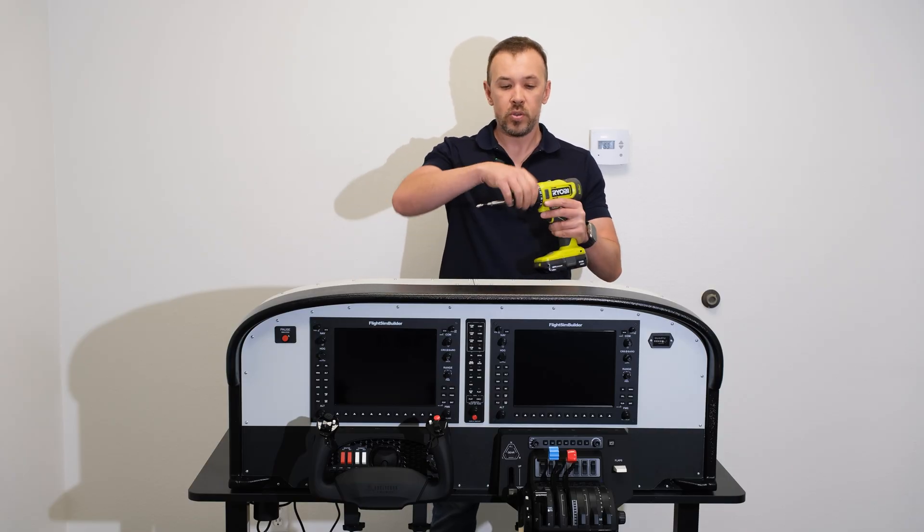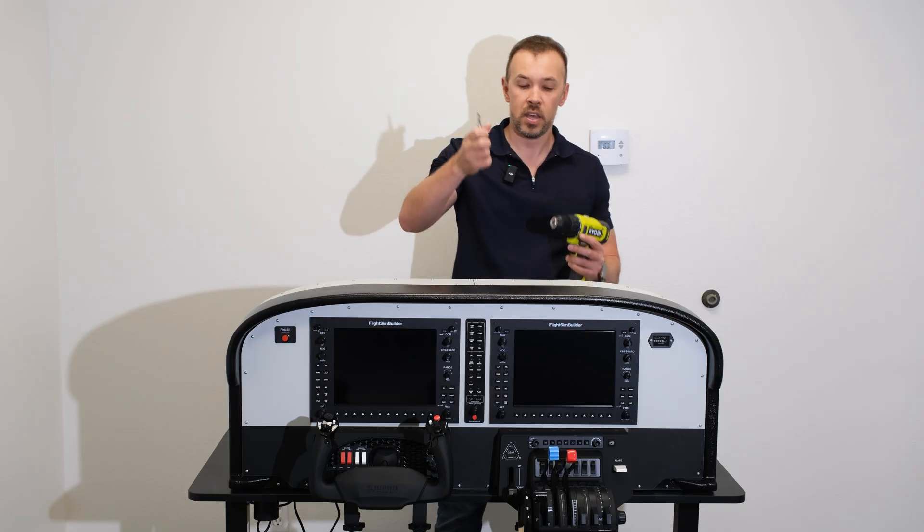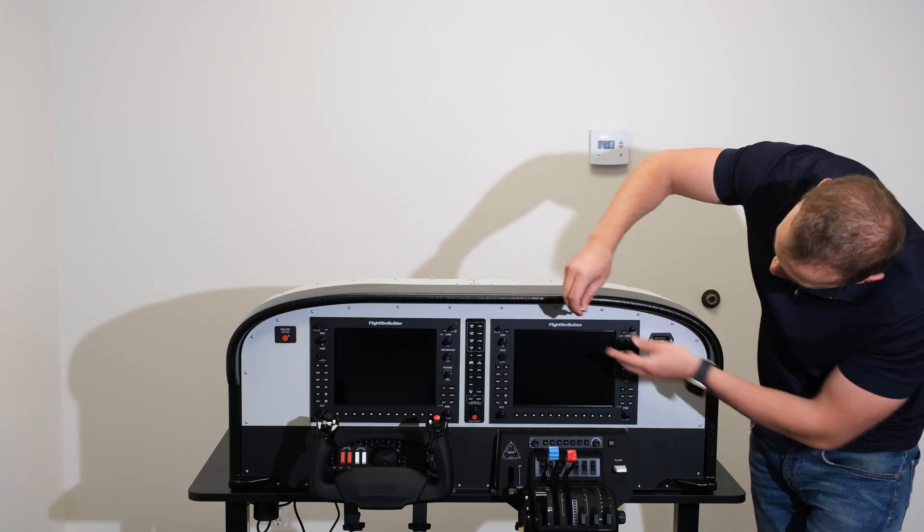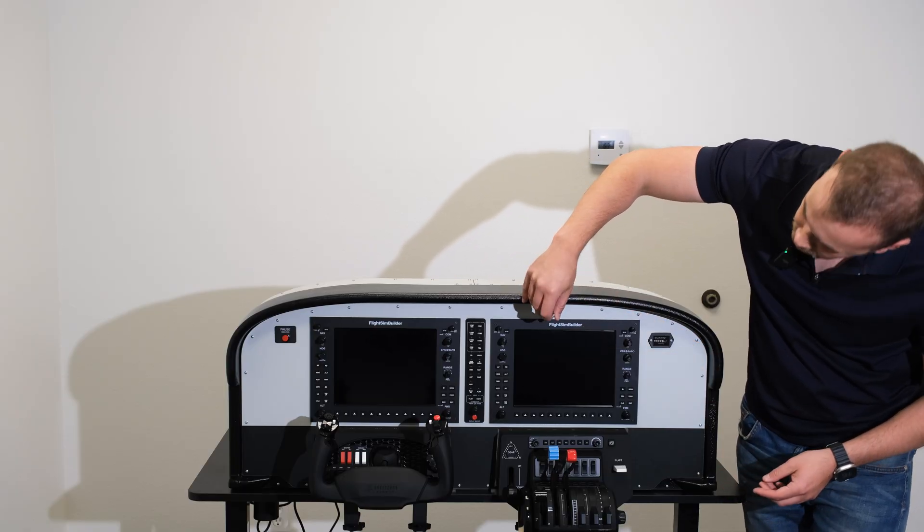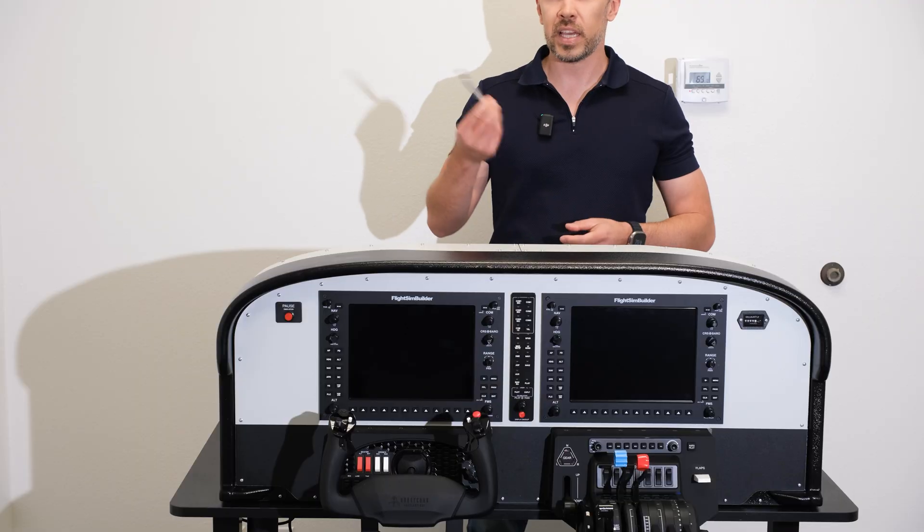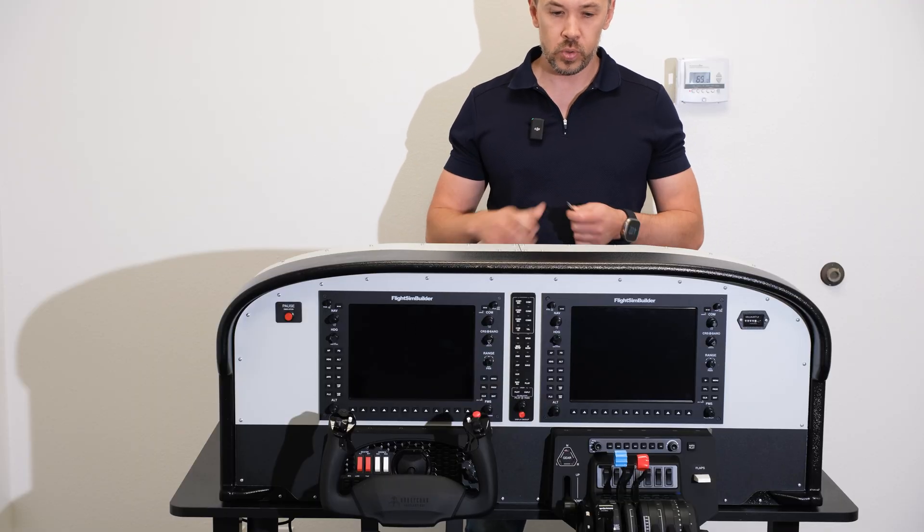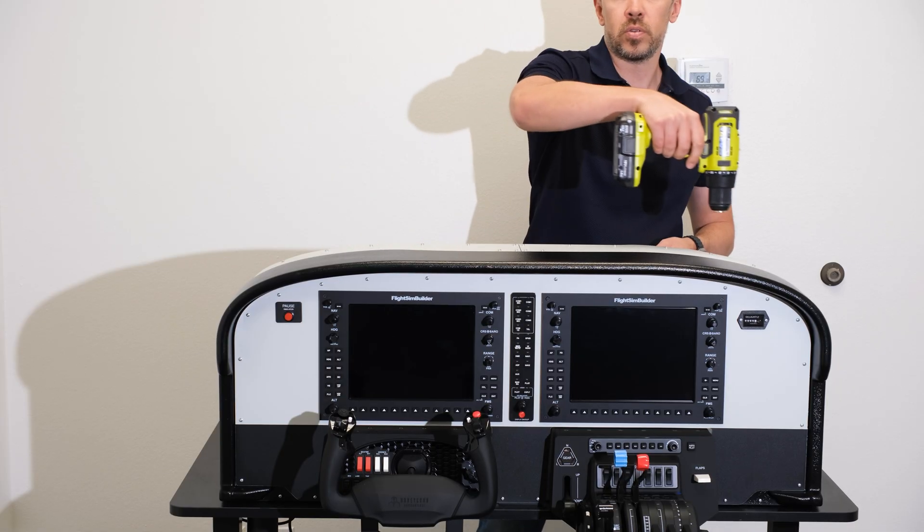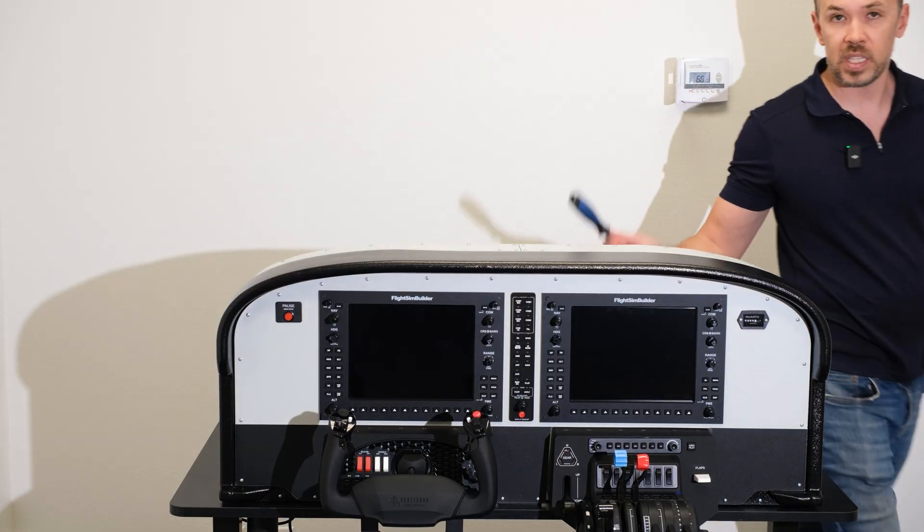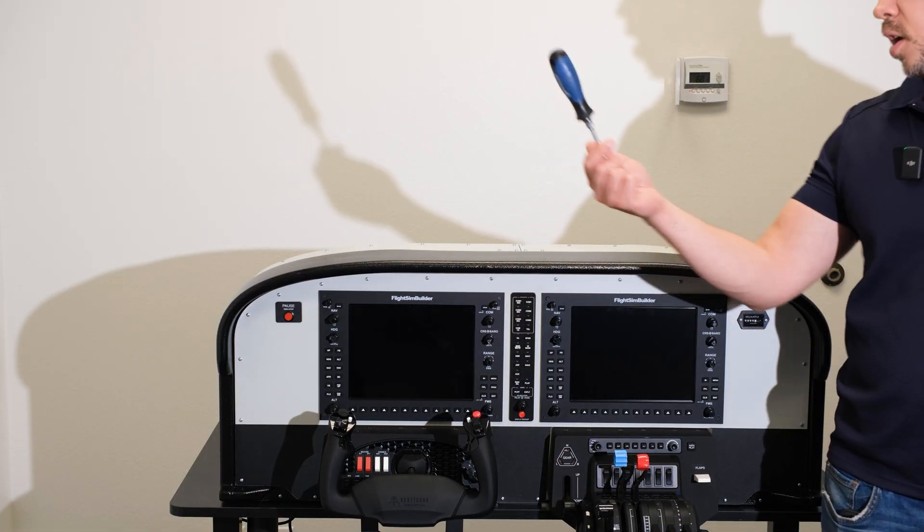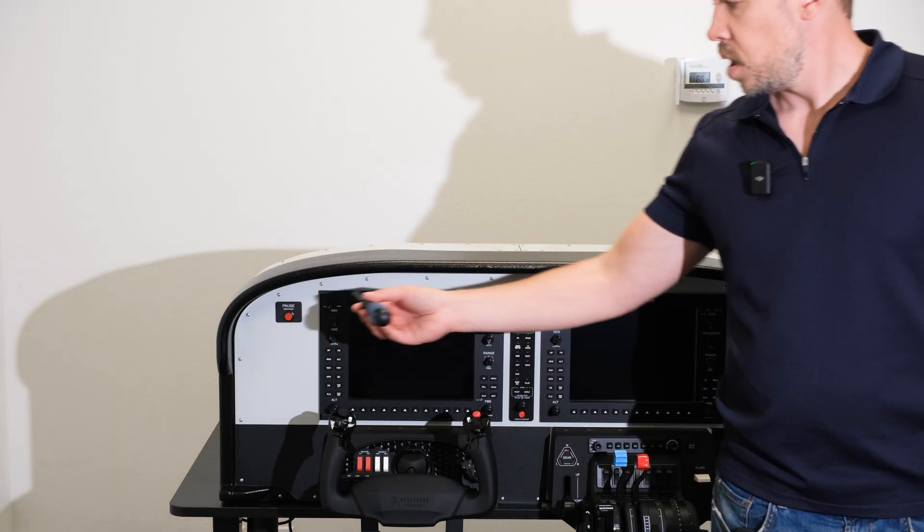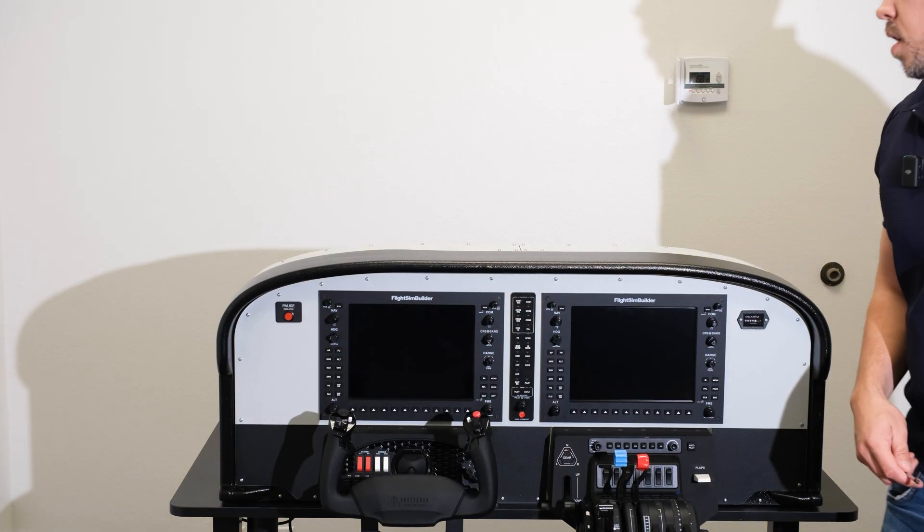I'm also using an extension like this for the screws here in front of the panel. Because this way, I make sure I'm not going to damage the glare shield. But the extension is something extra. What I would do is just use a power tool to get all of the screws everywhere, except for the faceplate. I would use just a manual screwdriver, a long screwdriver, and make sure I don't scratch the glare shield.